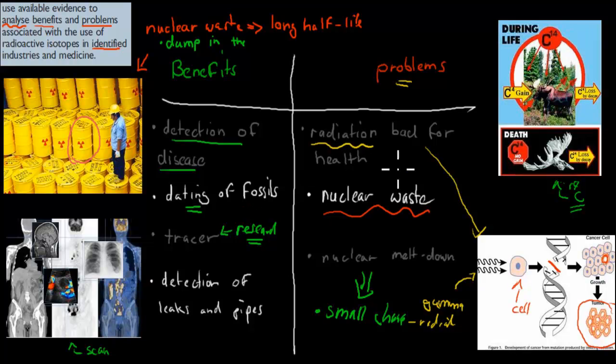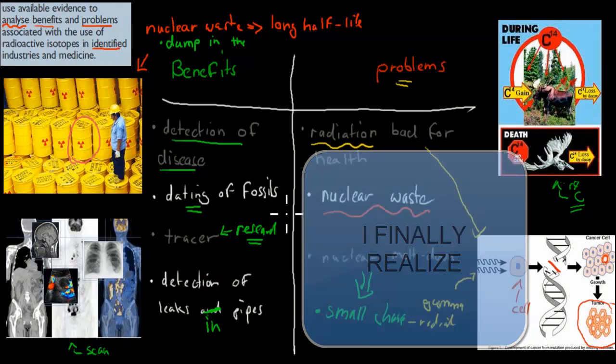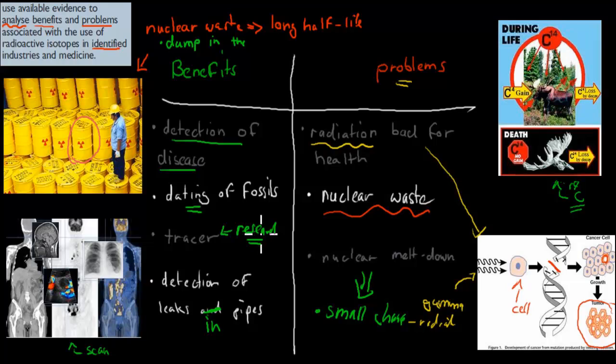So these were some of the problems associated with using radioisotopes, but there are also lots of benefits. So benefits were, for example, to help with detection of disease, with dating of fossils, being able to trace things in our body which helps research, and being able to detect leaks in pipes. Actually I wrote leaks and pipes, leaks in pipes. But yeah, some of the problems were that radiation is bad for health, which is because it can actually cause cancer, for example. We have nuclear waste which does not go away for long periods of time, so we have to dump it somewhere, which can overall still come back to haunt us as well.